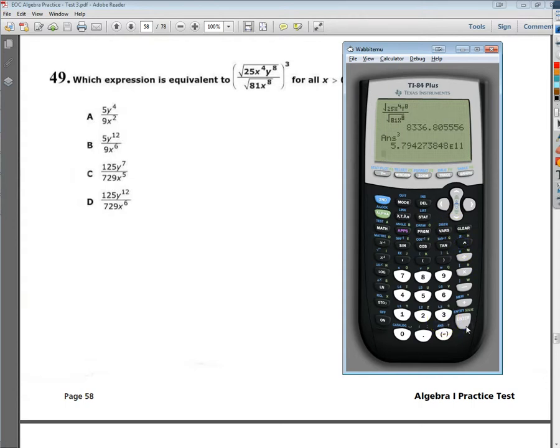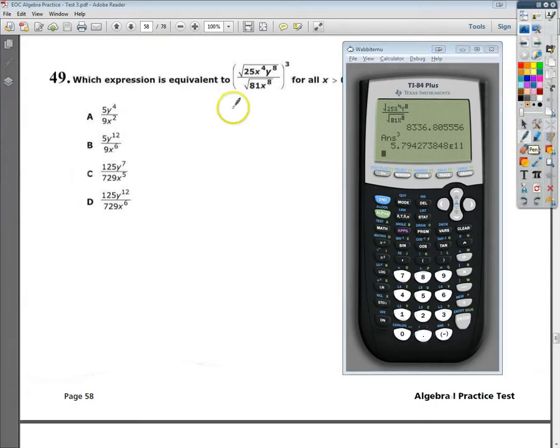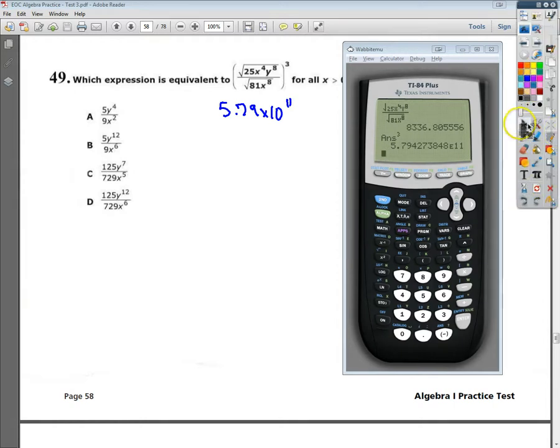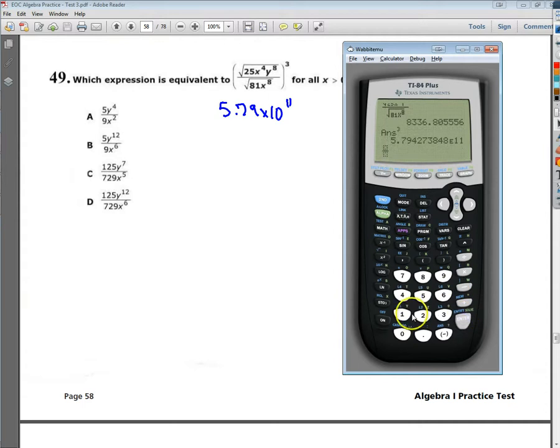It's 5.79 times 10 to the 11th. I'm actually going to write that down somewhere on my page. 5.79 times 10 to the 11th power. That's what e to the 11th means. Now, my answer choices, when I type them in, one of them should give me that number. Like I said, this has no mathematical value to it. But worst case scenario, this is it.